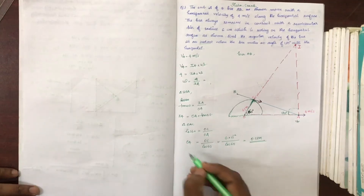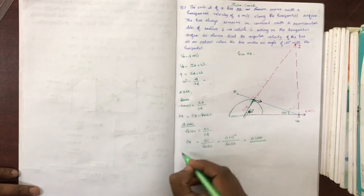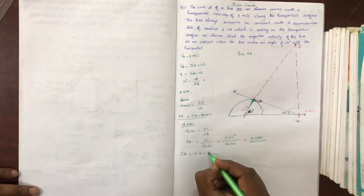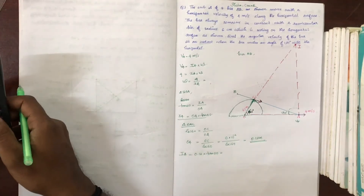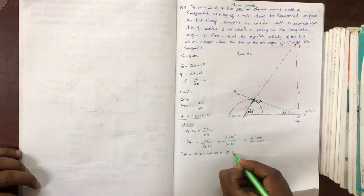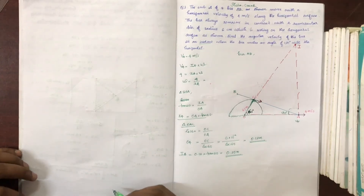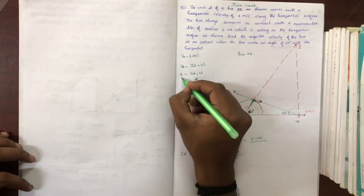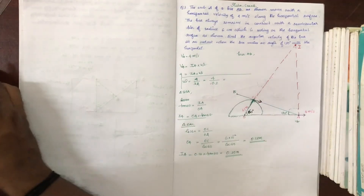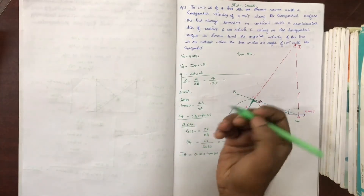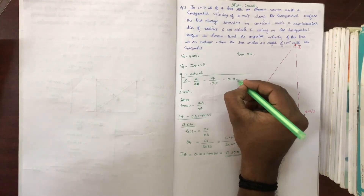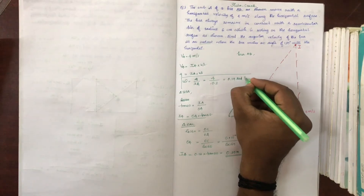OA is equal to 0.12 meter. We can find IA: IA is equal to 0.12 meter multiplied by tan(t), which is equal to 0.20 meter. Now we can find omega: omega is equal to 4 divided by IA, where IA is equal to 0.2, giving 4 divided by 19.20, which is equal to 0.19 per second.